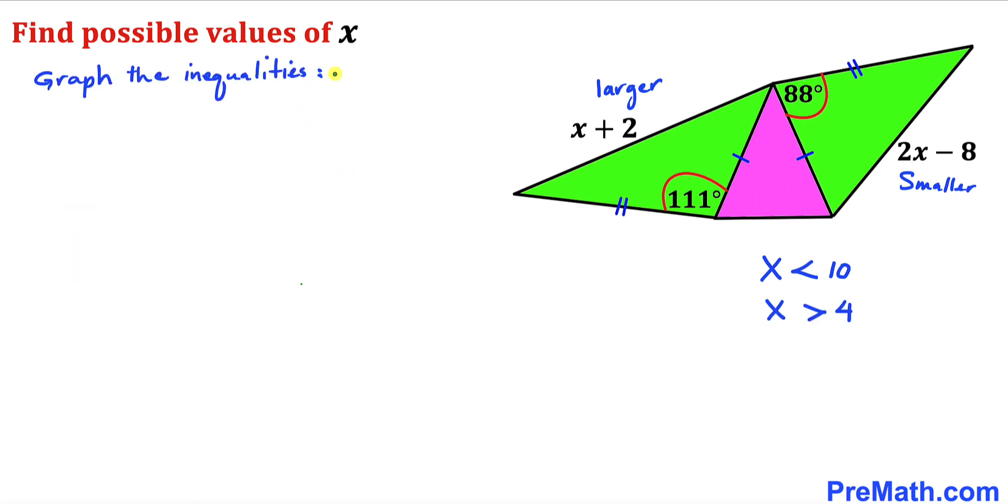And here's our final step. Let's go ahead and graph these inequalities now. Here's our real number line. Here's our graph for x is less than 10, and here's our graph for x is greater than 4. This is going to be the region where both graphs overlap. So therefore x is going to be between positive 4 and positive 10.